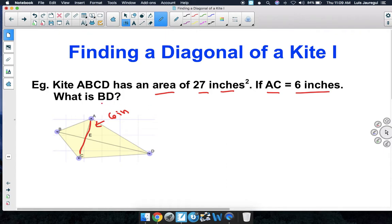Also, BD, in this case, is the other diagonal of the kite. Since we're given the area, we can relate those quantities, area and the lengths of the diagonals, through the formula: area is equal to 1 half times diagonal 1 times diagonal 2.